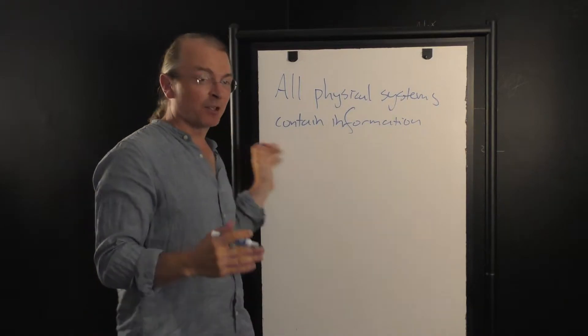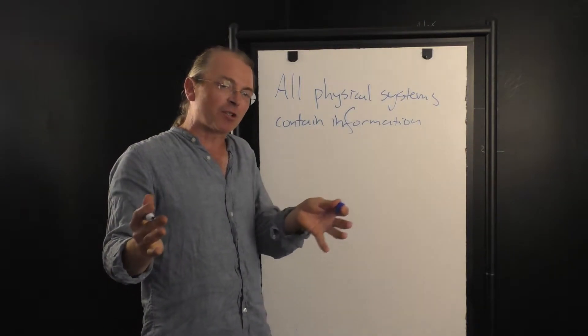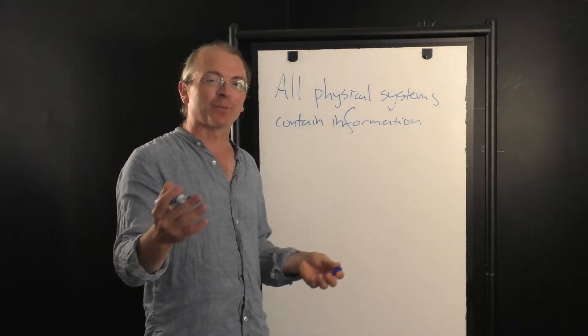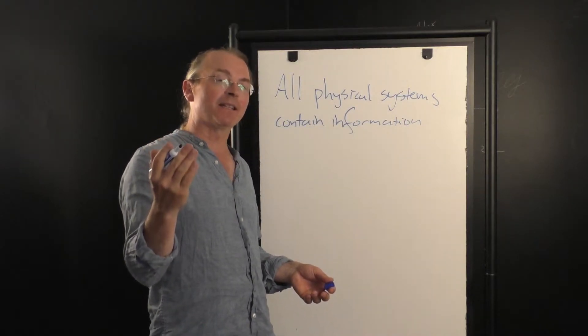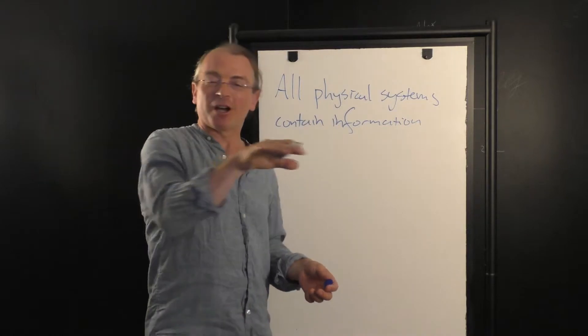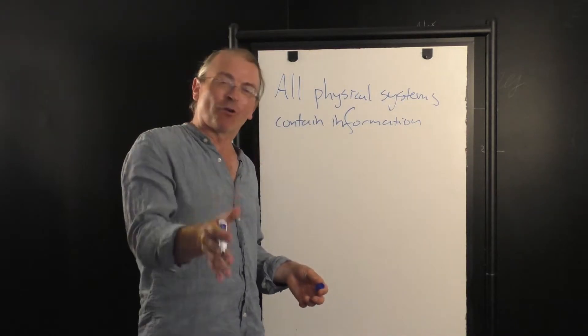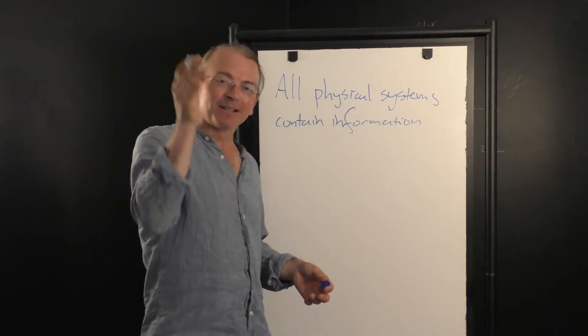So I gave specific examples of this. A switch, open or close, contains information. The presence or the absence of a photon, a particle of light, contains information. Photon polarized like this or photon polarized like that contains information.